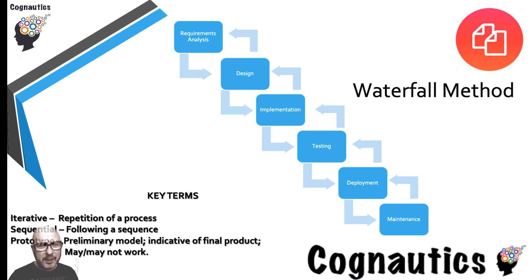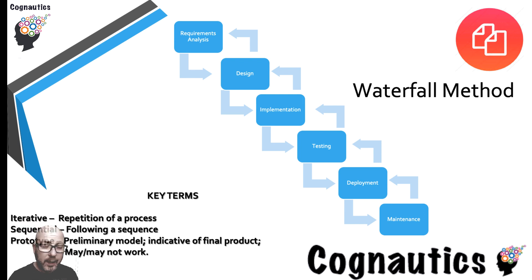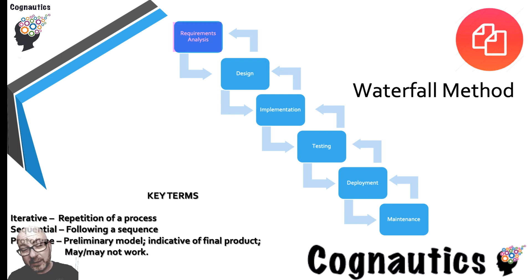Let's start investigating methodologies by looking at the waterfall methodology — it's the oldest methodology and the easiest to understand. The first obvious thing is why it's called the waterfall methodology. You can see that all the steps are arranged one above the other and they flow down like a waterfall. That's why it's called a waterfall: you start at requirements and analysis and work your way down.